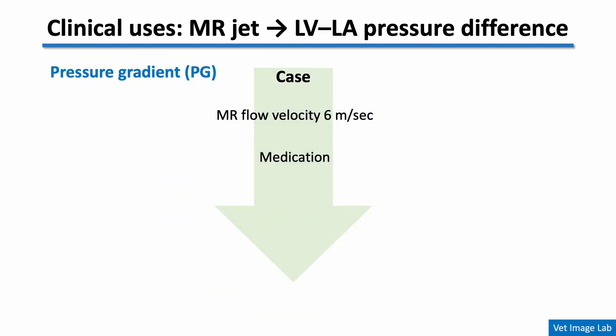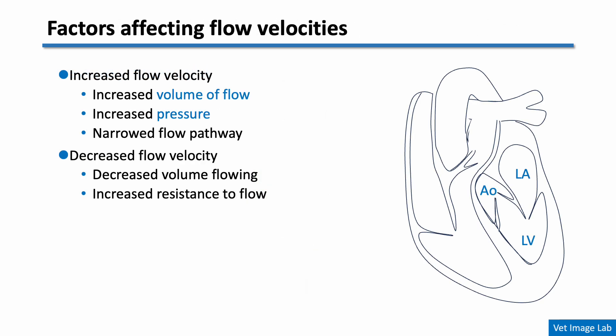Let's understand why we measure the pressure gradient instead of just the regurgitant flow velocity. Suppose we have a patient with mitral regurgitation and the MR jet velocity is measured at 6 m/s. Three months later, this patient's MR flow velocity has decreased to 5 m/s. Does that mean the regurgitation has improved? The answer is no, because flow velocity is influenced by several factors — most importantly, it's not just the volume of regurgitation that matters. Pressure plays a significant role.